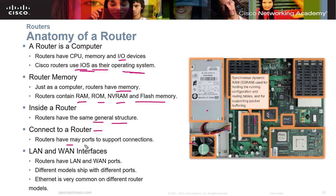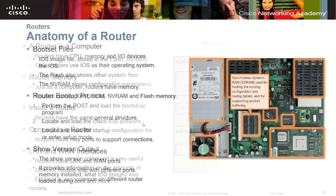When connecting to routers, they have lots of ports that support different types of connections. You have LAN and WAN interfaces — LAN being local, WAN being wide area. Different models ship with different ports depending on age, but Ethernet is very common across most router models you'll encounter.